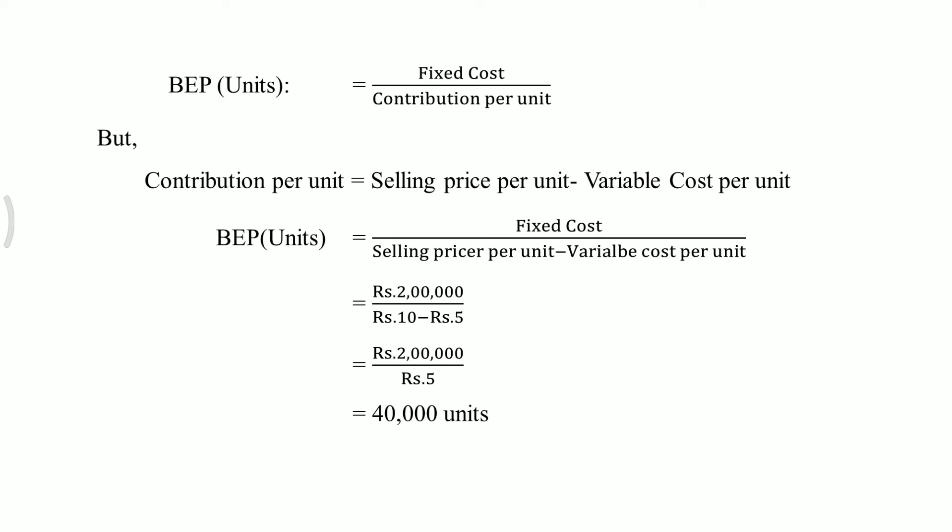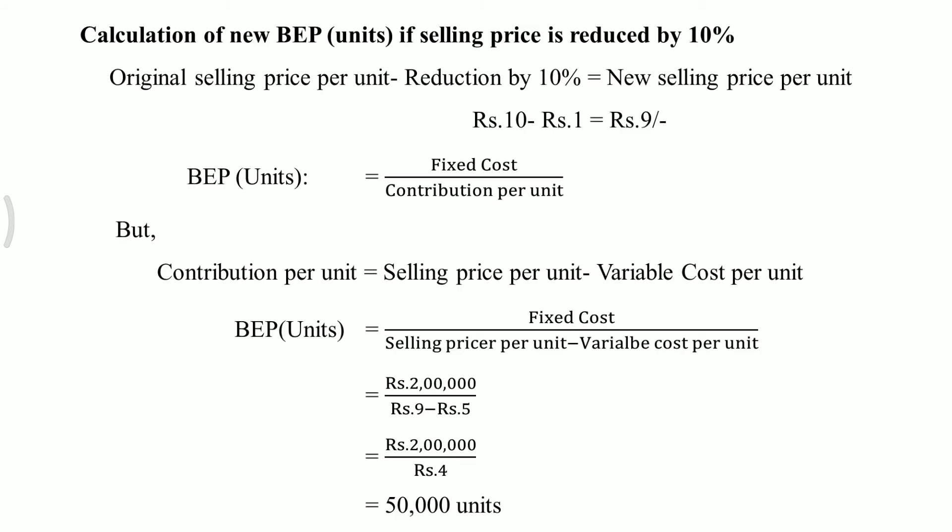Now we calculate new BEP units if selling price is reduced by 10 percent. We need to calculate the new selling price: new selling price equals original selling price minus reduction by 10 percent. Original selling price is rupees 10. Ten percent of rupees 10 is rupees 1, so 10 minus 1 equals rupees 9. This is the new selling price per unit.